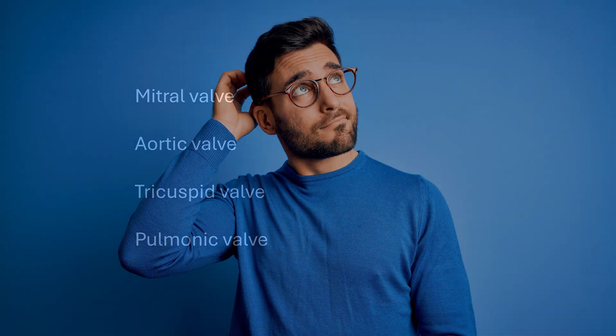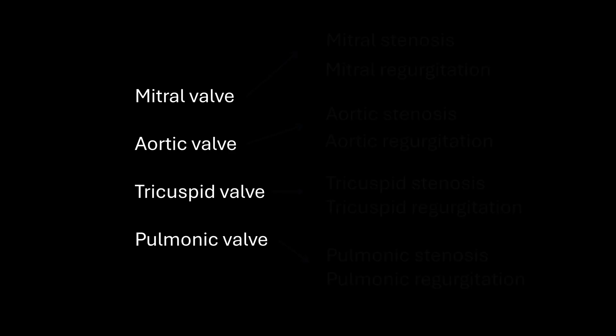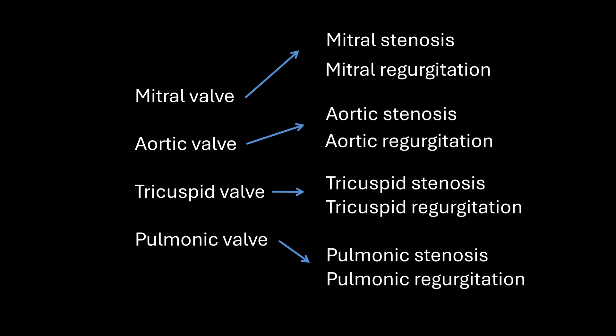Why are valvular emergencies so confusing to understand? I think it's because there are so many different possibilities. There are four different valves in the heart, and each valve can be stenotic or regurgitant. Therefore, there are eight different major valve problems that can occur, and each one has different criteria and treatment. You can even classify them as acute or chronic, so this can be quite confusing.